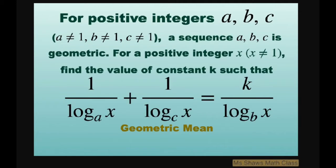Hi everyone. For positive integers a, b, and c, none of them equal 1, and a sequence a, b, c is geometric.